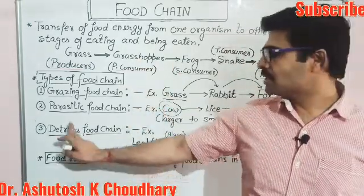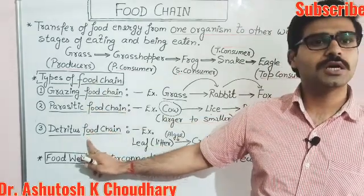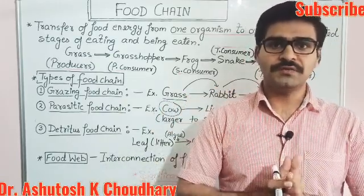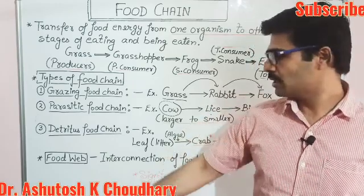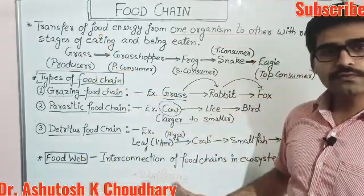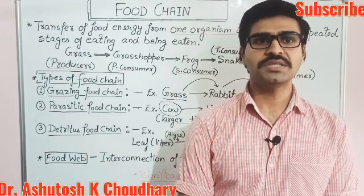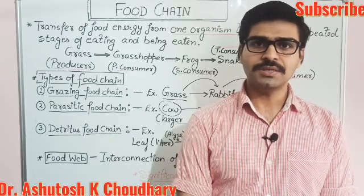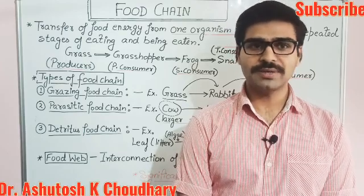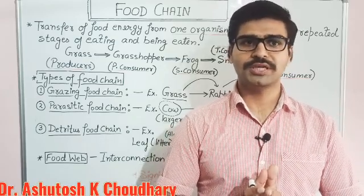Now the last topic is the food web. In an ecosystem, all these types of food chains are not isolated — they are interconnected with each other. This interconnection of different food chains in an ecosystem is known as a food web. The significance of food chain and food web: they make the ecosystem stable, regulate and maintain the population of different living organisms, fulfill nutritional requirements, and enable the cycling of nutrients in the ecosystem. Thank you.